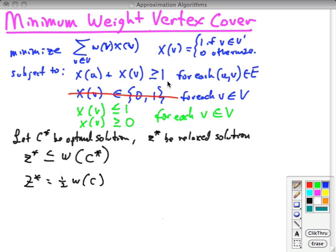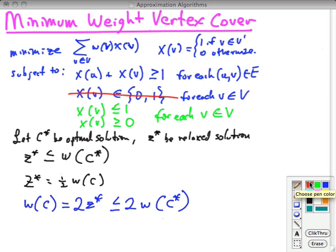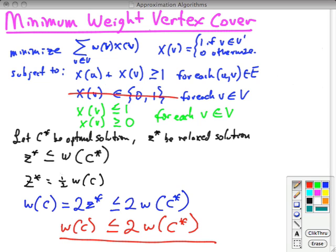So to finish this up, this last expression here is what that work ended up with, and we can rewrite that as W(C) is equal to 2 Z*. But we have the prior result of Z* is less than or equal to W(C*). So we can write less than or equal to 2 W(C*). And that gives us W(C). The weight of our solution is no worse than twice the weight of the optimal solution, which is what we're looking for. It is a two approximation algorithm.